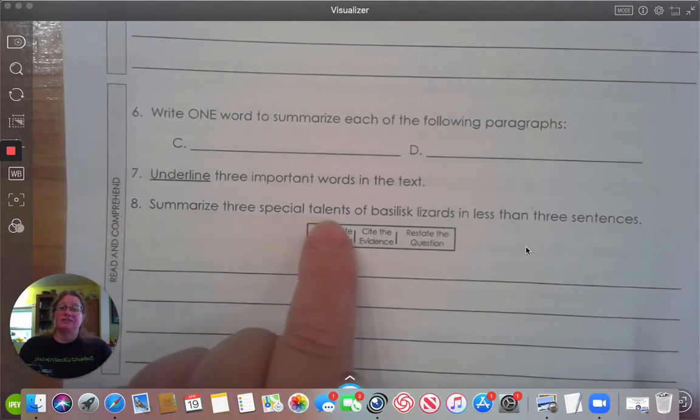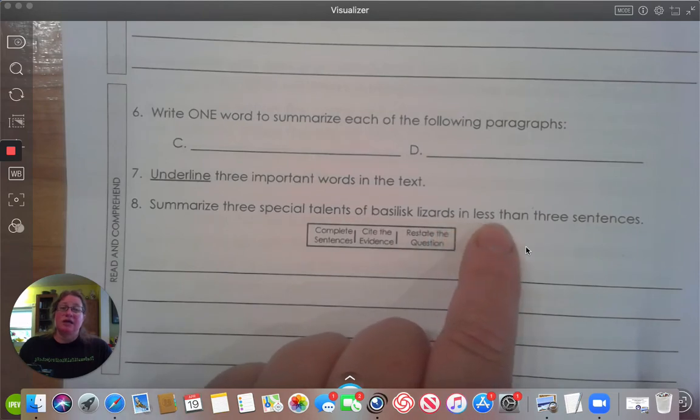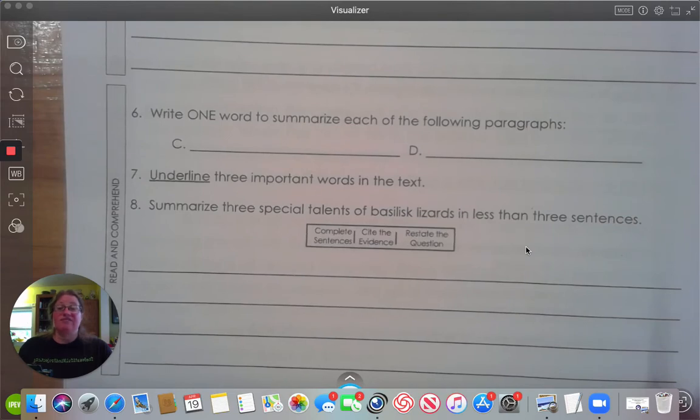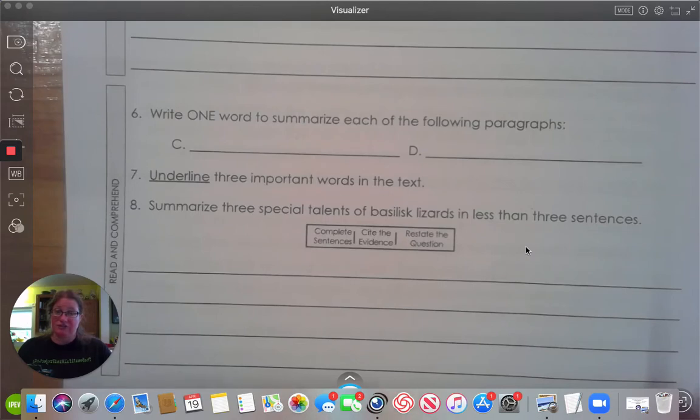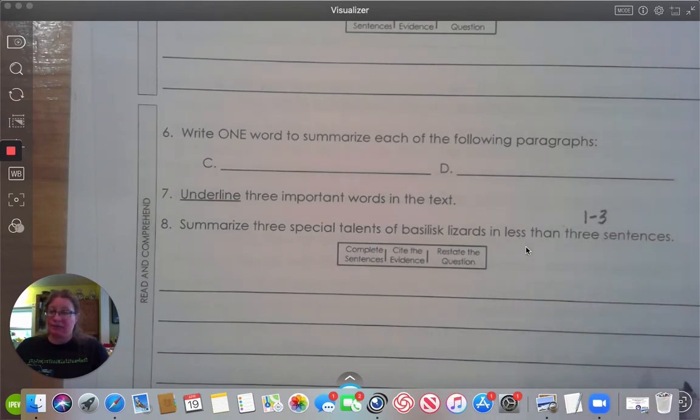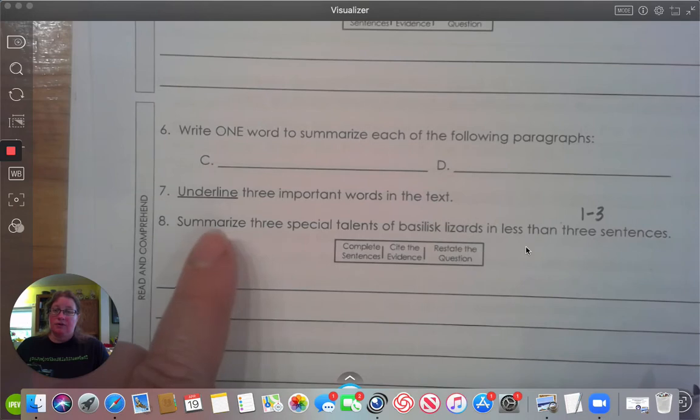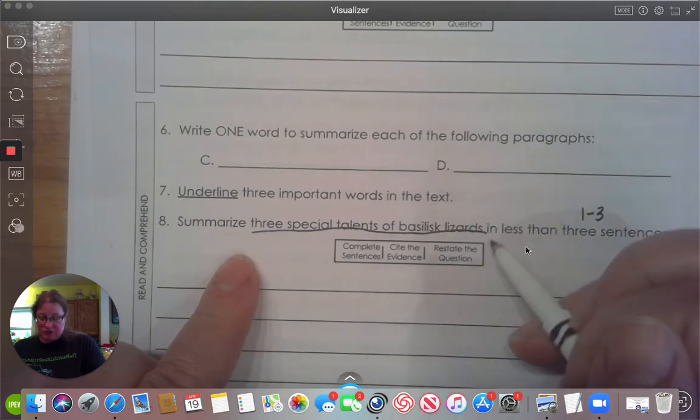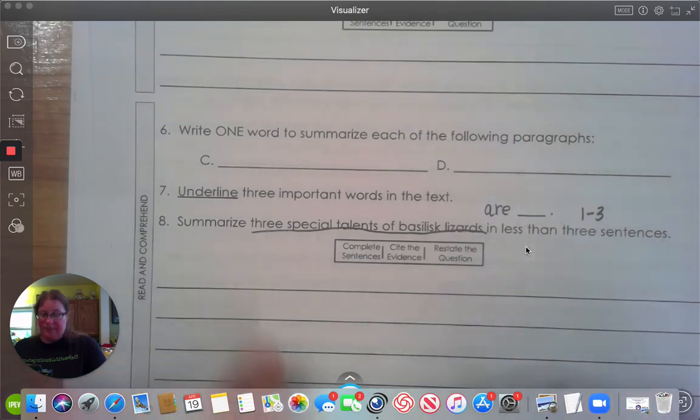Number eight. Summarize three special talents of basilisk lizards in less than three sentences. So if you have more than three sentences, you're going to not follow the directions. So less than three. So you need one to three sentences. Do not write any more than that. And you need to list three special talents of basilisk lizards. And I would say are and use that as your sentence stem.